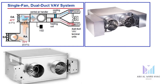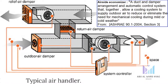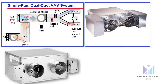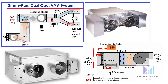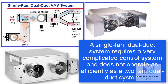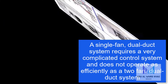In this example, the economizer is controlling the mixed air temperature to 55°F, thus saving energy to operate the cooling coil. However, the heating coil must warm the air from 55°F to 105°F primary air temperature. If the economizer was not activated, the mixed air temperature would be 75°F, requiring less heating energy, but the cooling coil must then operate. Optimizing the energy use of a single fan dual duct system requires a very complicated control system and does not operate as efficiently as a two fan dual duct system.